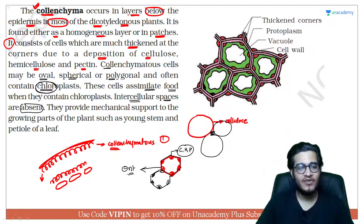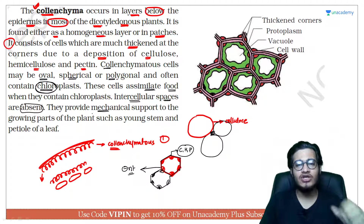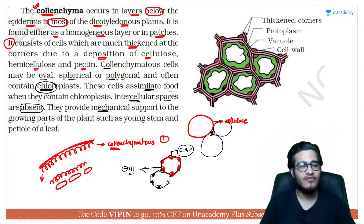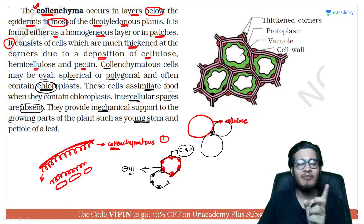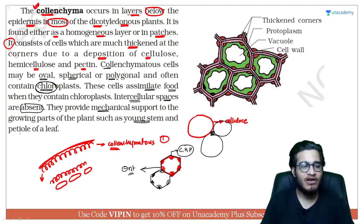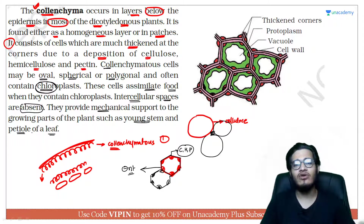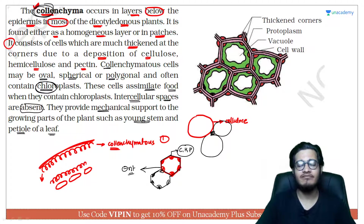Colenchyma provides mechanical support. In a young stem — which is basically not yet rigid — or in the petiole of a leaf, colenchyma provides mechanical support. The leaf blade will also get support from colenchyma.